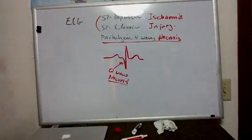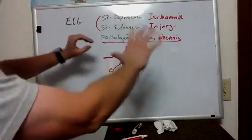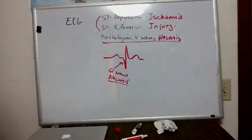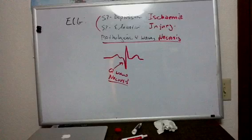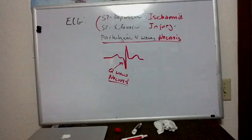That's the end of the basic stuff we're looking at to identify an acute coronary syndrome. Next we'll talk about coronary artery anatomy and localizing these changes on the 12-lead ECG. Thanks for hanging in there, guys. Take care.